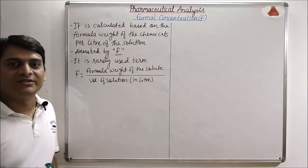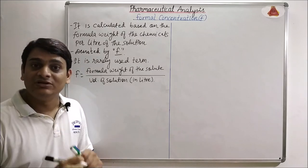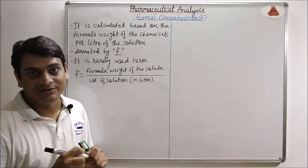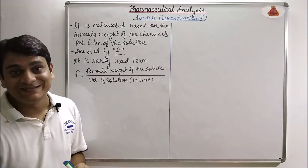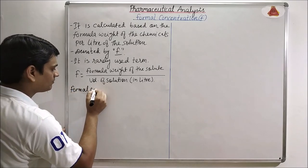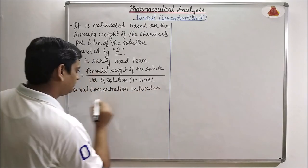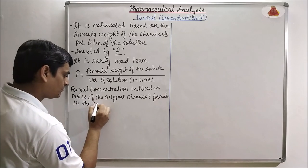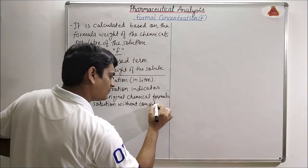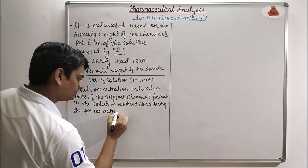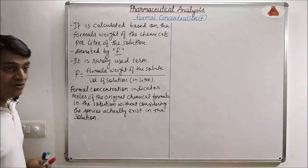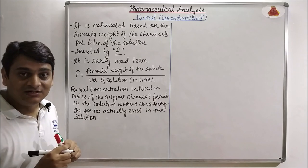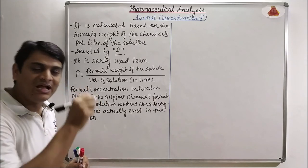Coming to the difference between formal concentration and molar concentration. Formal concentration indicates moles of the original chemical formula in solution without considering the species actually existing in the solution. Molar concentration, on the other hand, is the concentration of the species which actually exists in the solution.